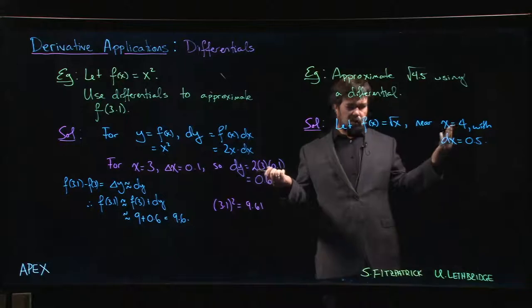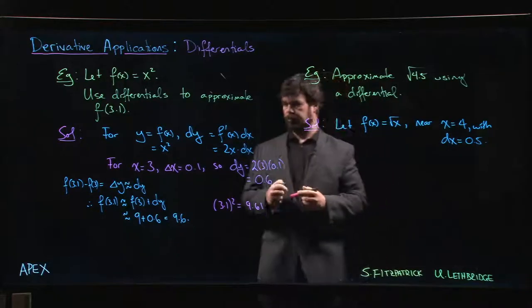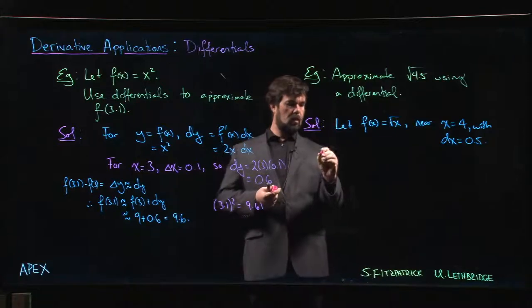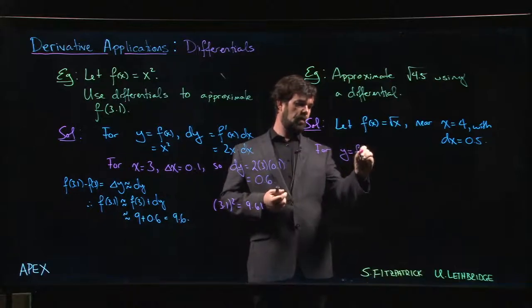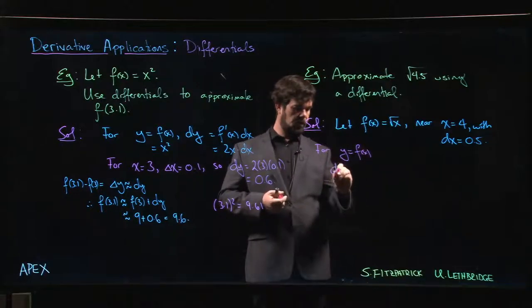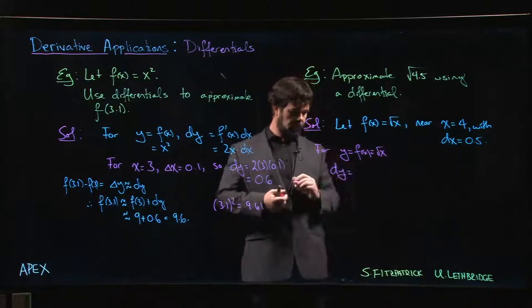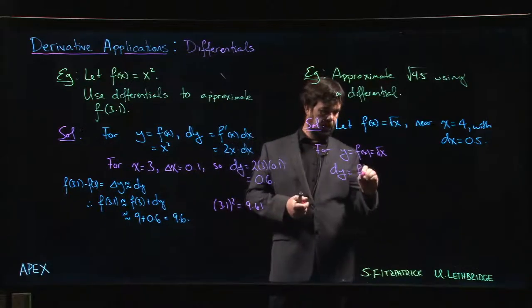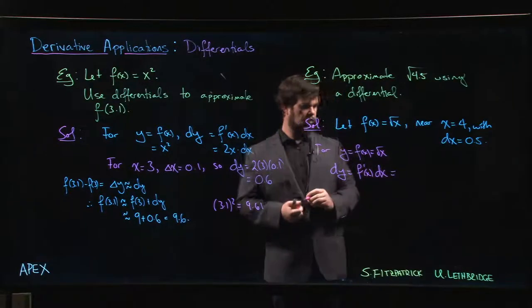So we go with 4 because we know that root 4 is 2. Now we calculate that. So we let y equal f(x), so dy, and f(x) is root x, so dy is going to be f'(x) times dx.